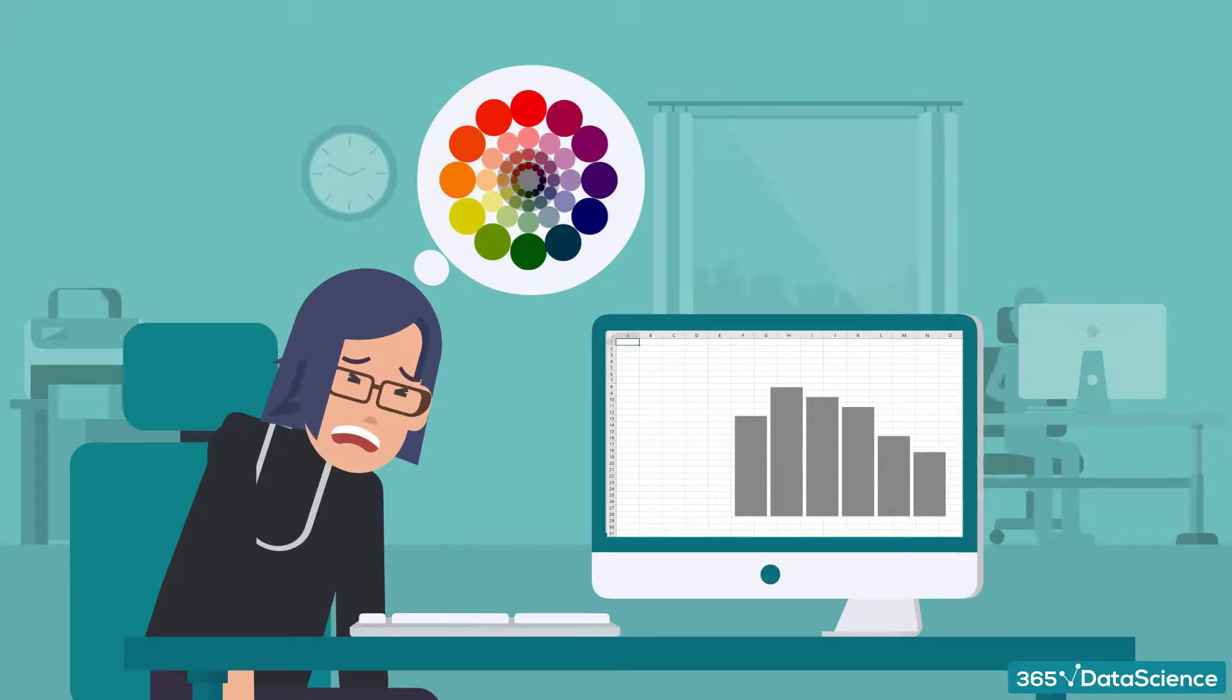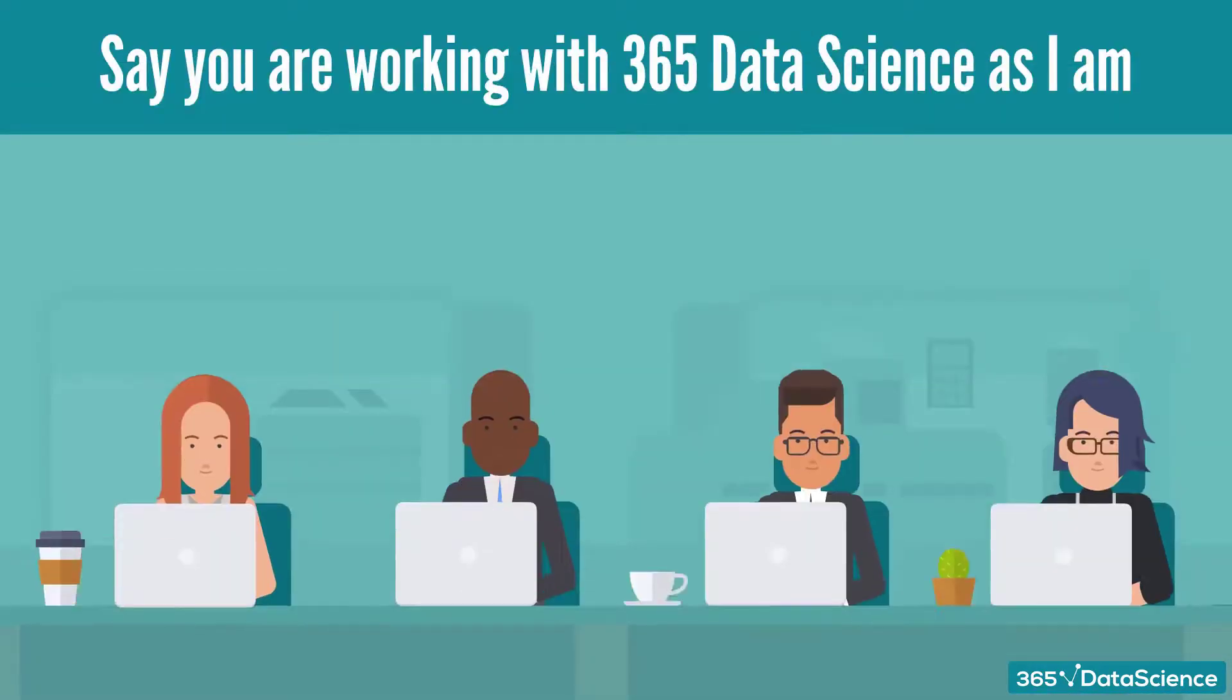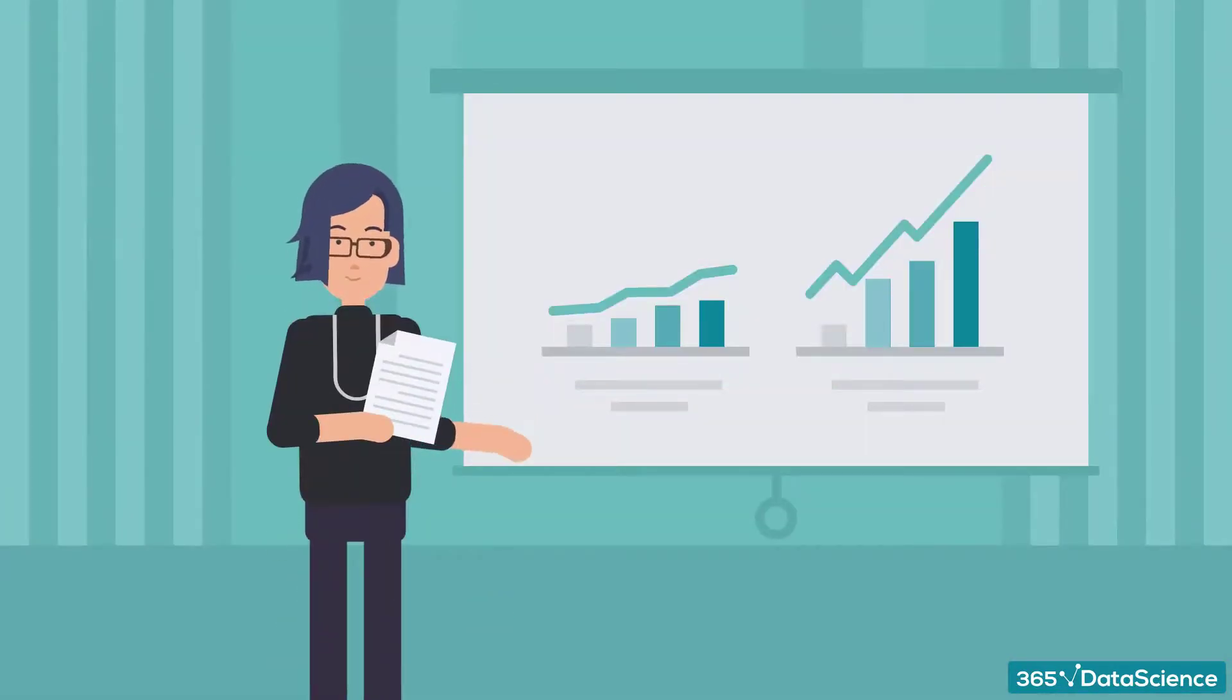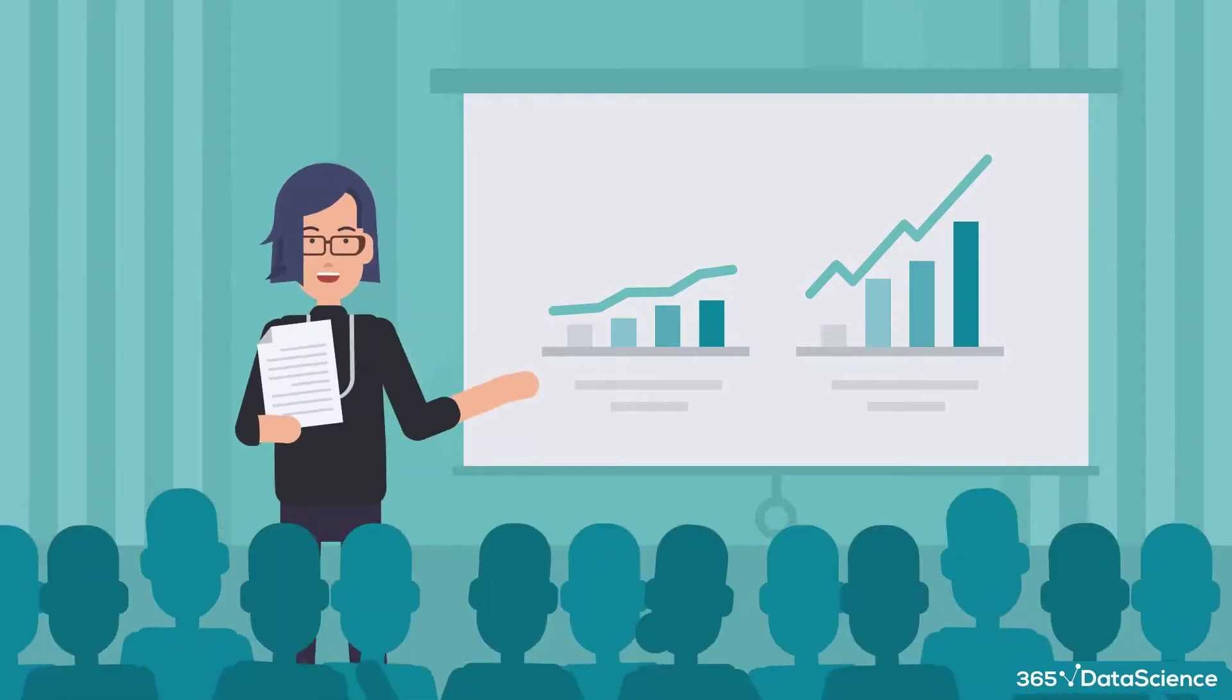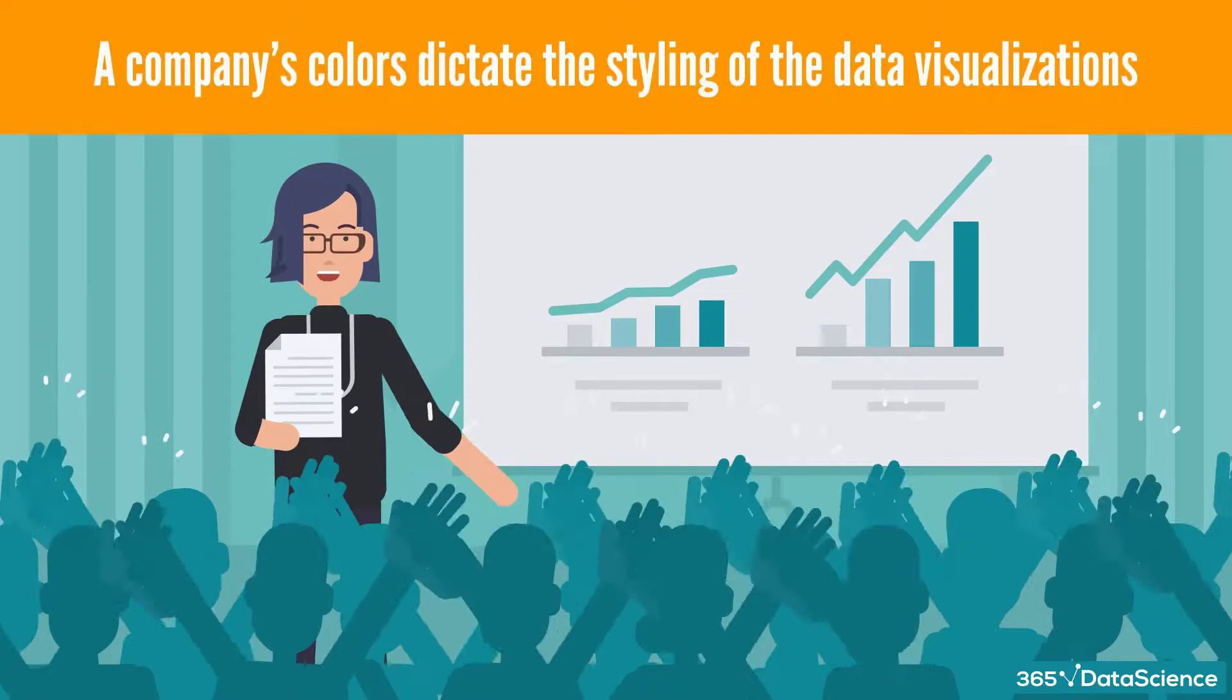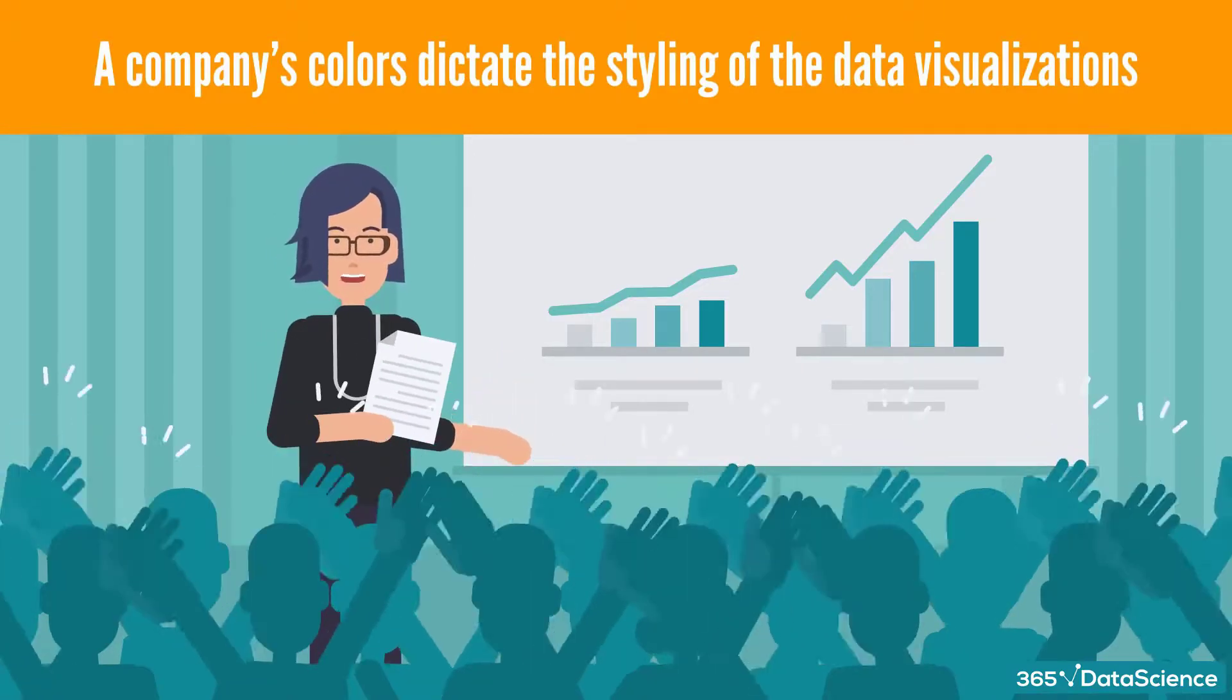So what do data viz people normally do? Well, there are three general cases. The first one is when your colors are predetermined. Say you are working with 365 Data Science as I am. If I were to make some graphs that were intended for the 365 team, I'd normally go for the 365 color. In this way, my charts will immediately relate to the audience and will appear very professional. In fact, quite often a company's colors dictate the styling of the data visualizations.